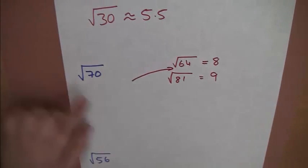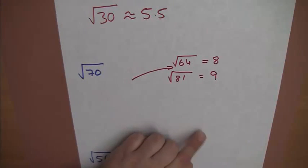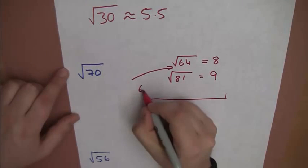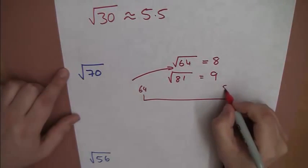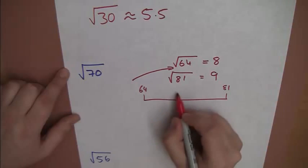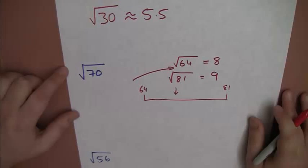So, 70's got to go in somewhere in there. Now, it's closer to 64, because if I spread this out on a number line, just knowing where these are, 64, 81, well, we're going to look at somewhere around here, aren't we?